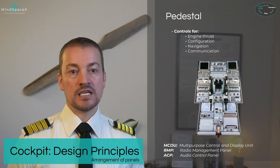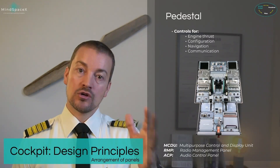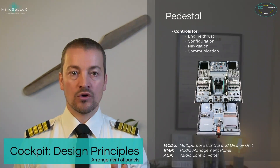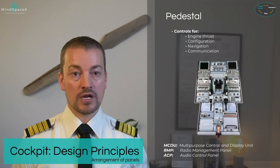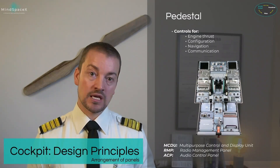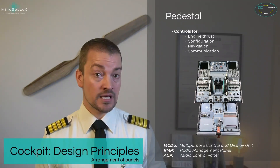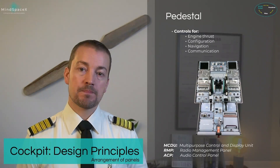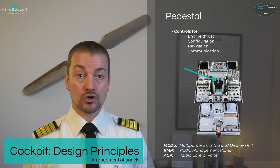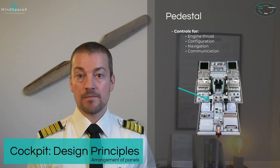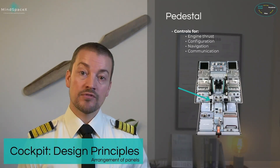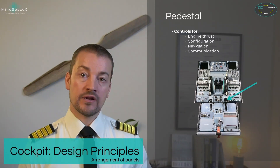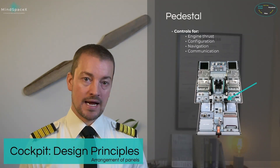Right below that is the audio control panel. The ACP is used by the pilots to identify which frequencies and radios they would like to listen to and transmit on. Audio control is for what you want to listen to and transmit on — and listening is not just radio communication to the ground; it also includes intercommunication, as well as communication with ground crew and cabin crew. We also have controls here for thrust — the thrust levers, the speed brake lever, and the flaps and slat control lever — all operated from the pedestal with easy access from both pilots.